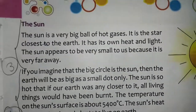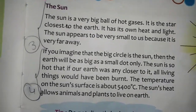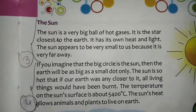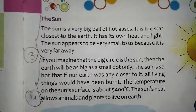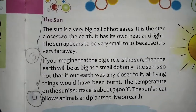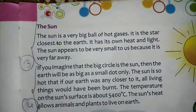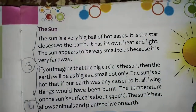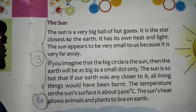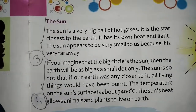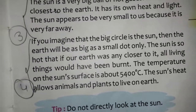The sun. The sun is a very big ball of hot gases. It is a star closest to the earth. From the sun, the earth is in the third place. It has its own heat and light. The sun appears to be very small because it is very far away.